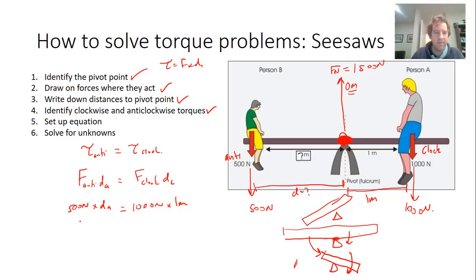And then I just simplify and find this out. So 500 newtons times D equals 1000 newton meters. And then I divide both sides by 500 newtons. That cancels out on that side, and on this side I get two meters left over.